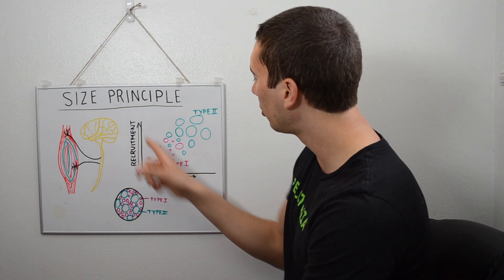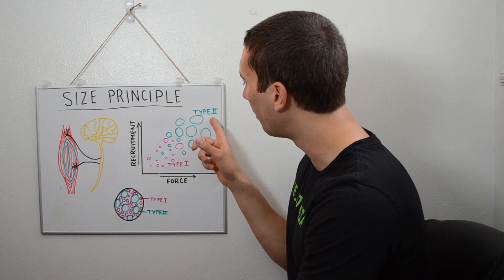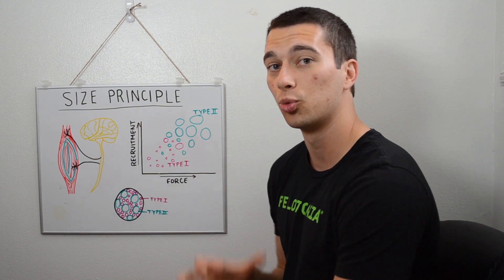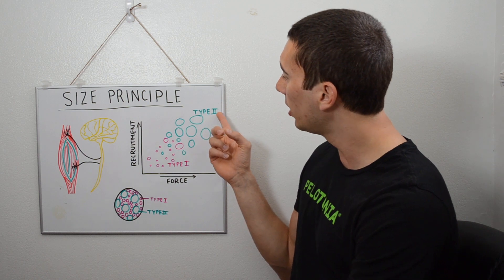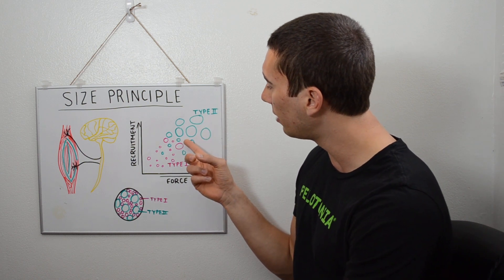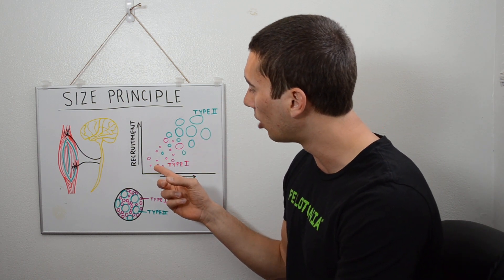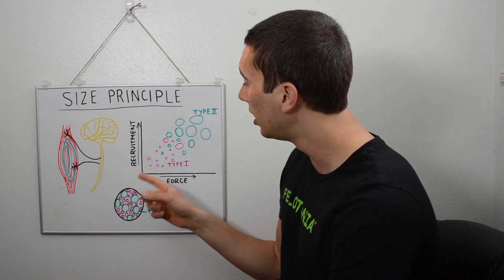If we're thinking about high recruitment, high force, this might be something like a power lift or an Olympic lift that's really maximal, like a one rep max. Whereas down here might be a 5 or 10 rep max, and right here is something like a run where you could do hundreds of reps no problem.